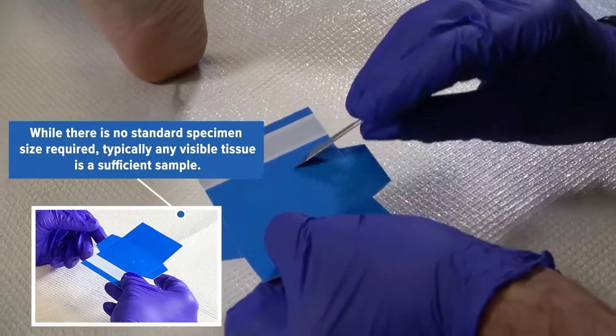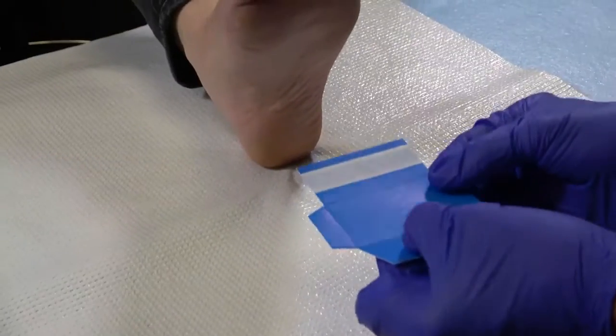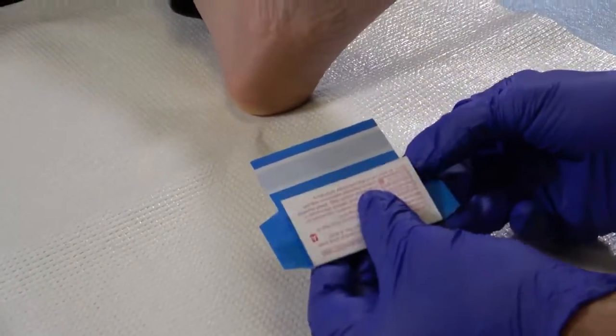Any amount of visible tissue is typically sufficient for testing. After collecting the specimen, fold the bottom part of the collection pack labeled A up to cover the sample.